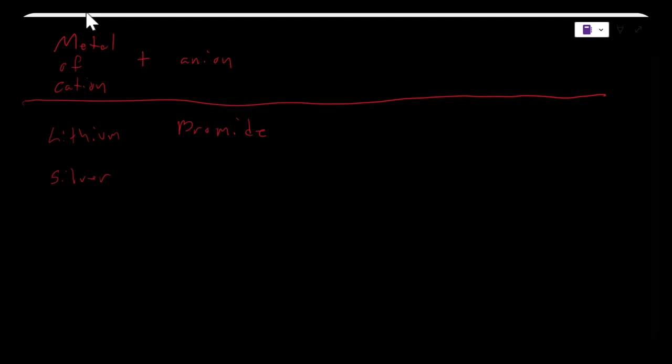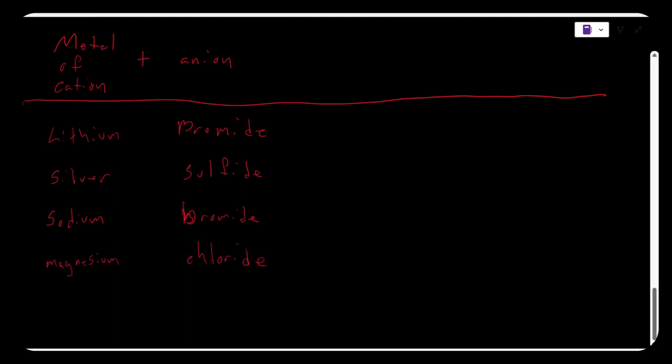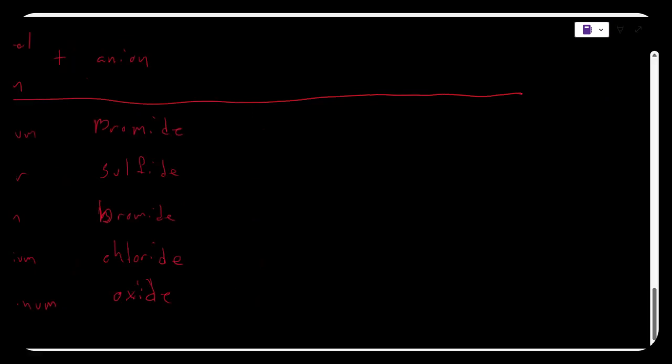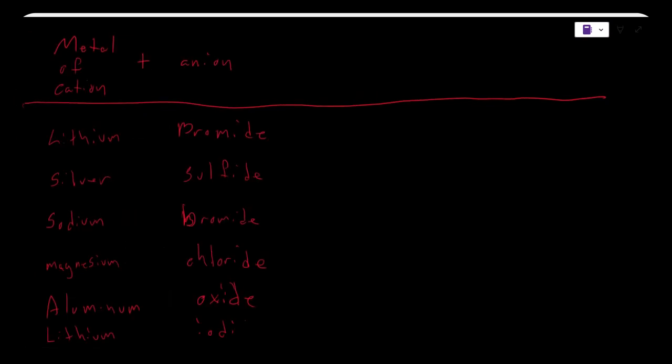So I'm just going to make a table and give some examples of names. We have the metal of the cation plus the anion. Examples would be lithium bromide, silver sulfide, sodium bromide, magnesium chloride, aluminum oxide, lithium iodide.